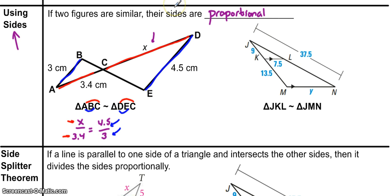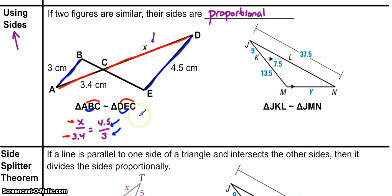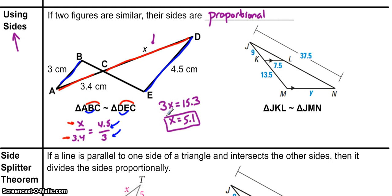If it helps you, you may want to color code the corresponding parts in the two triangles. This video will not cover how to solve a proportion — if you need help, please consult a previous video. Pause the video, solve this proportion, and find out what X is. The answers will be coming up in 3, 2, 1. The solution is X equals 5.1.